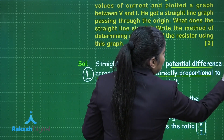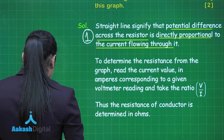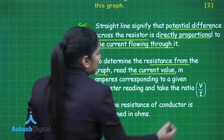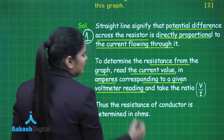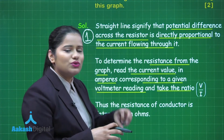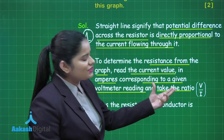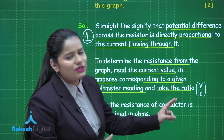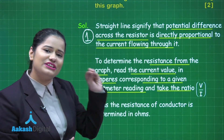For the second mark, you need to explain how the student will determine the resistance from the graph. To determine the resistance, the student needs to read the current value in amperes and the corresponding voltmeter readings, and take the ratio V/I. The student needs to take readings from the ammeter and the voltmeter, and find the slope of the drawn V-I graph.